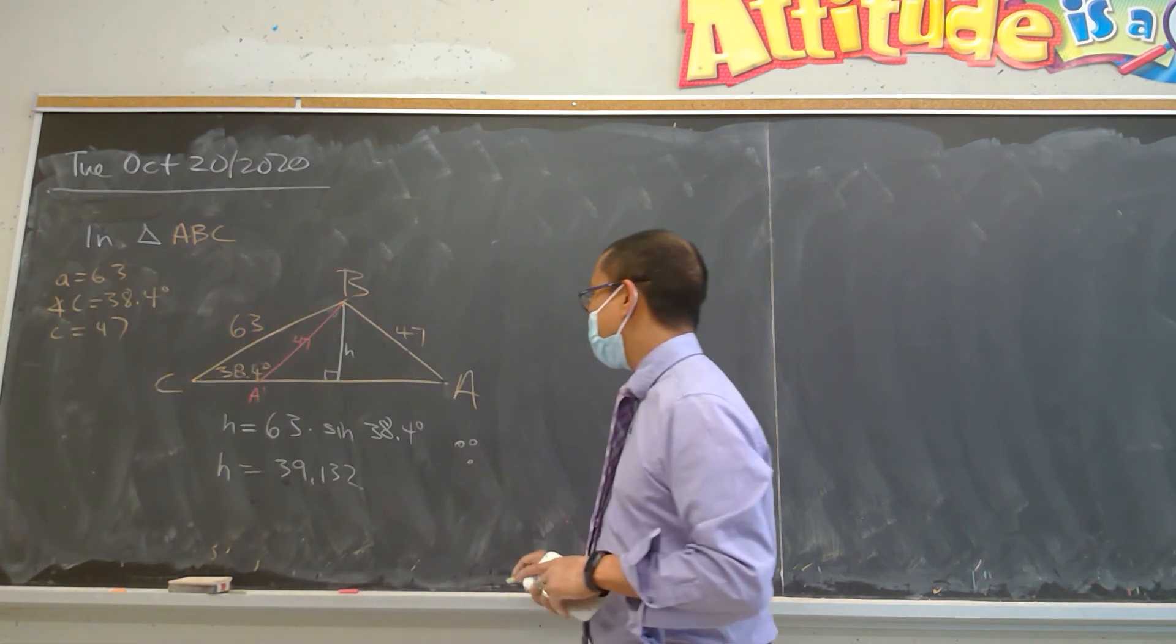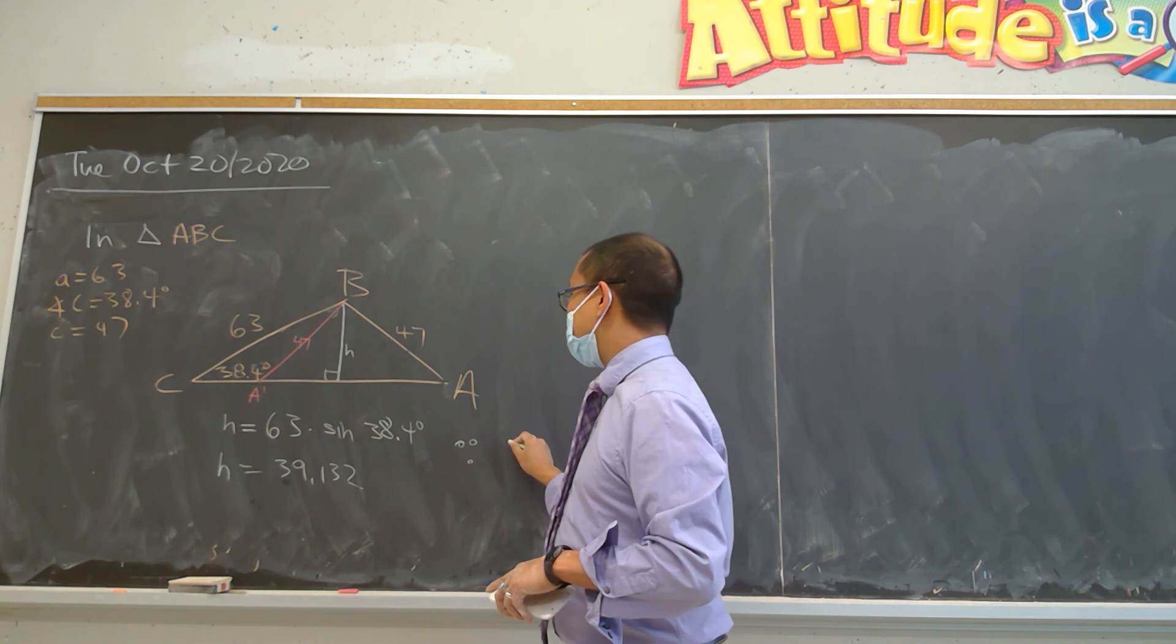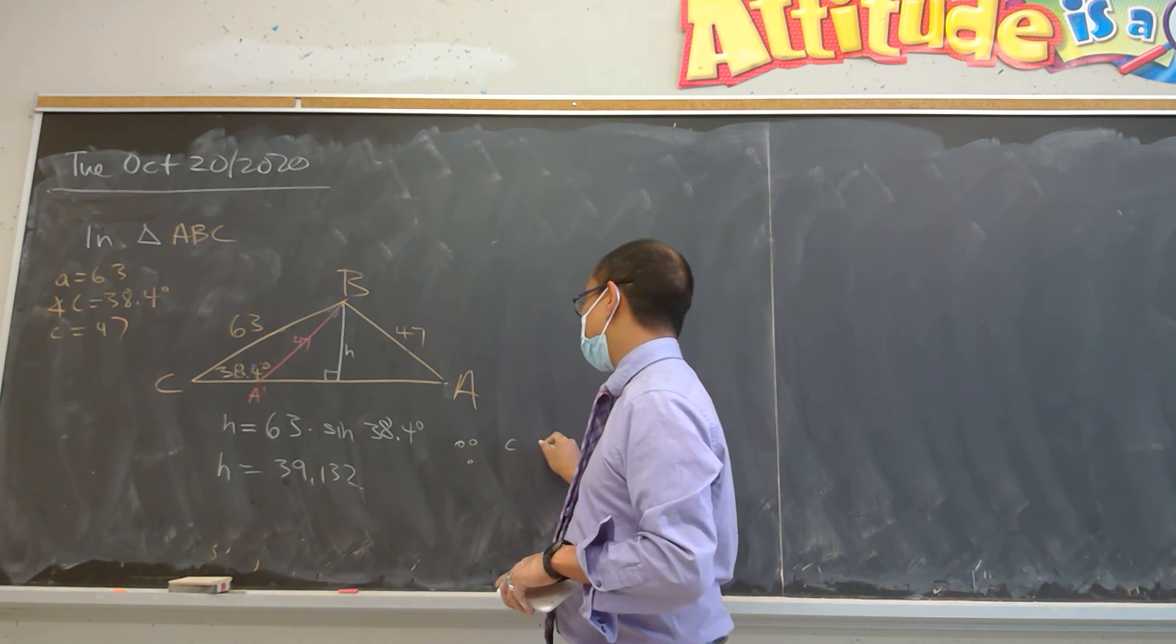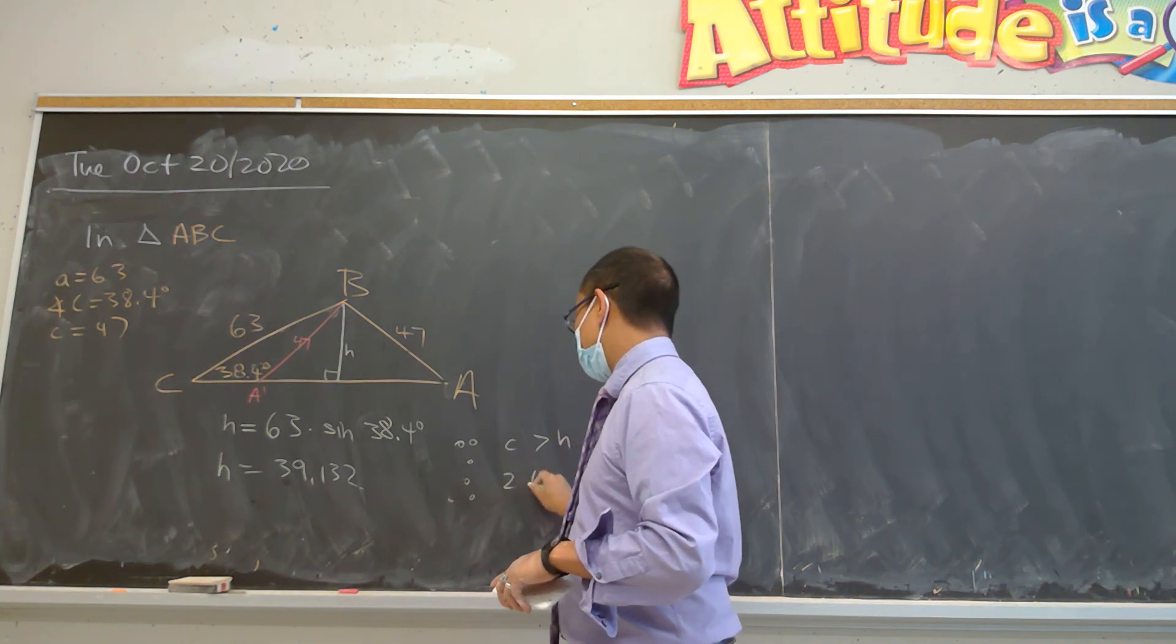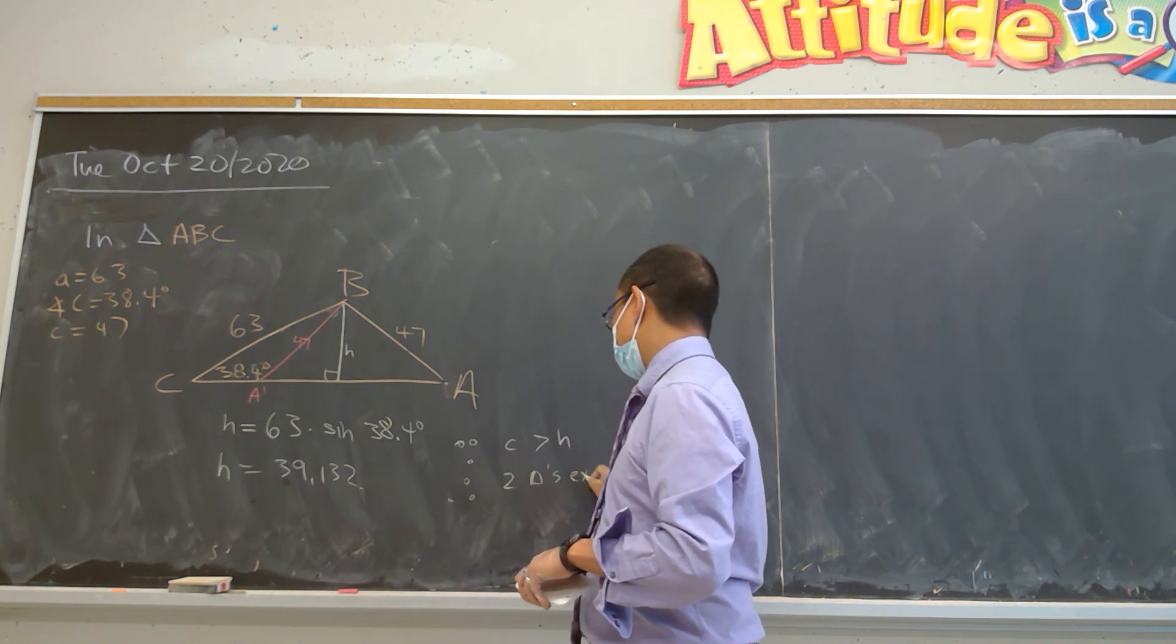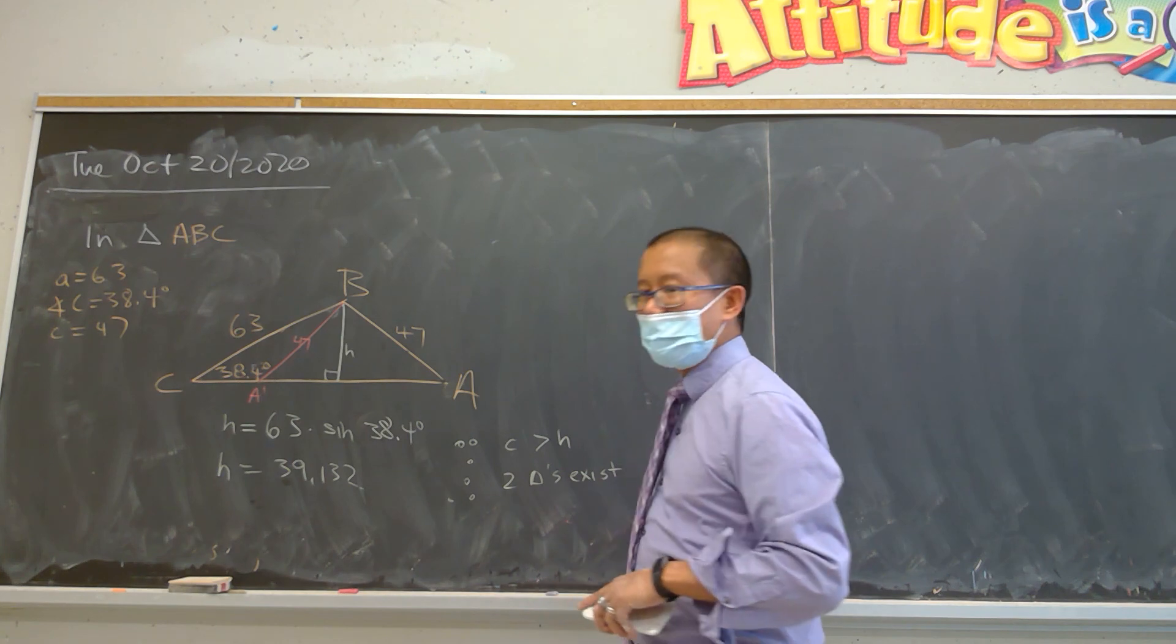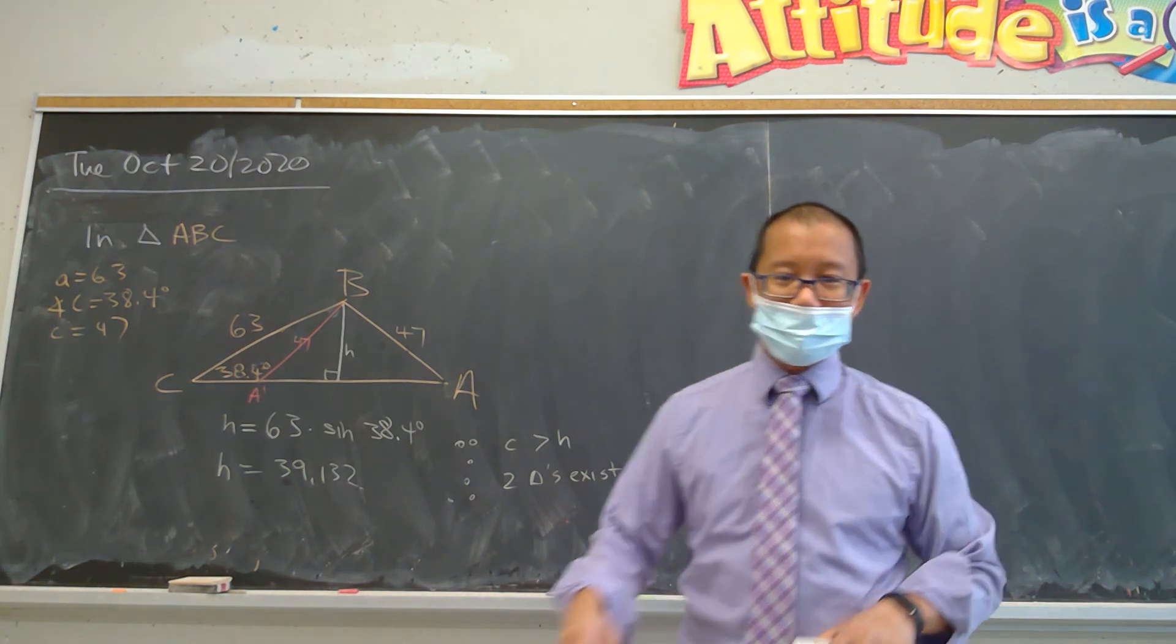So in this example, since side C is greater than the height, therefore two triangles exist. I'll stop this one here.